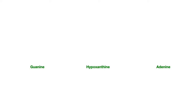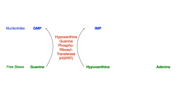Guanine will get recycled back into the nucleotide GMP, and hypoxanthine, which is a free base, will get recycled back into the nucleotide IMP — shown in blue on this slide. The enzyme that recycles both the free base guanine as well as the free base hypoxanthine is HGPRT, which stands for hypoxanthine guanine phosphoribosyltransferase. The first high yield point to know is that HGPRT converts both guanine and hypoxanthine, which are free bases, into GMP and IMP respectively, which are nucleotides.